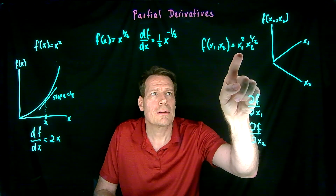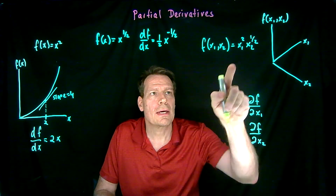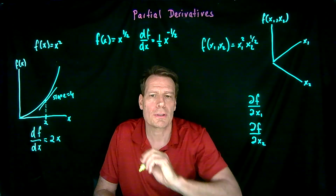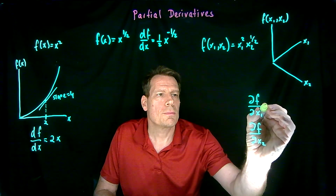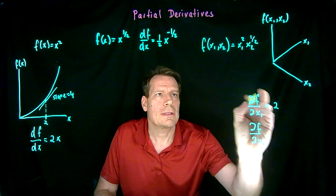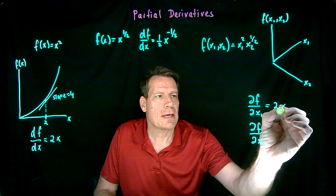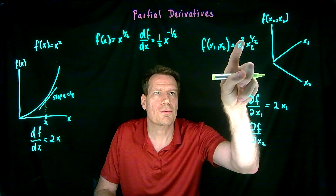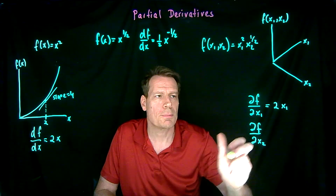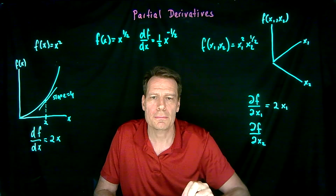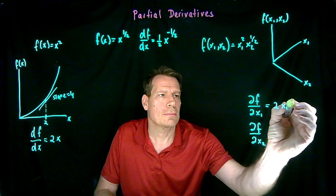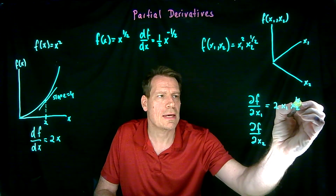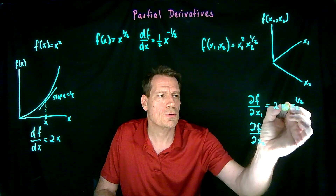So x1 is squared. When we take the derivative with respect to x1, we do exactly the same thing as before: we move the 2 — the exponent — up front times x1. We're taking a derivative with respect to that, so we subtract 1 from the exponent, leaving just 1 here. And then we leave the rest alone because we're not taking a derivative with respect to x2, so that just stays as x2 to the 1 half.